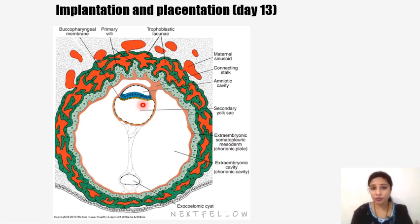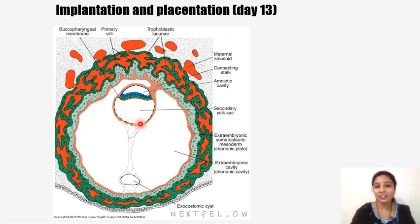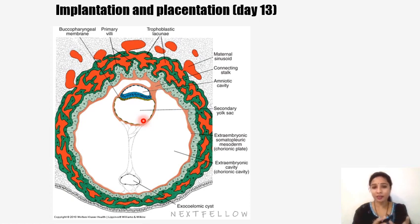The pinched-off part of the yolk sac is called the exocoelomic cyst, which is a temporary structure that degenerates and disappears, reducing the size of the yolk sac. The reduced yolk sac is then called the secondary yolk sac. The second week of development is known as the 'week of twos': the trophoblast differentiates into two layers — cytotrophoblast and syncytiotrophoblast — and the embryoblast forms two layers — epiblast and hypoblast.